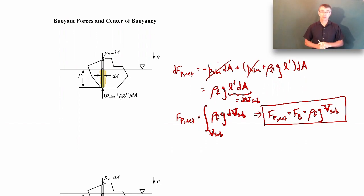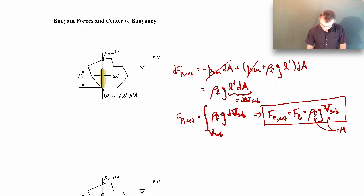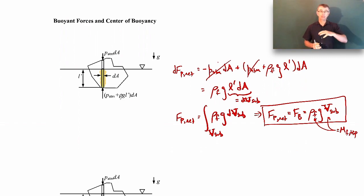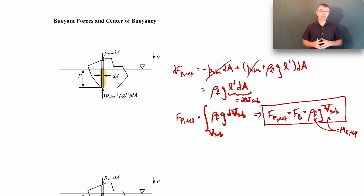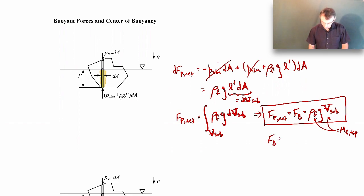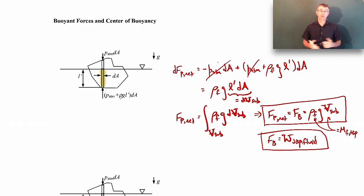The buoyant force is just the density of the fluid times gravity times the submerged volume. The density times the submerged volume is the mass of water — or fluid — that's been displaced. When we dunk that object into the fluid, some fluid has to move out of the way, and the amount is equal to the volume of the submerged object. Multiply that by the density and then by g, and you see that the buoyant force is just the weight of the displaced fluid. That's what we refer to as Archimedes' principle.